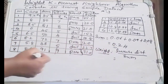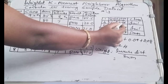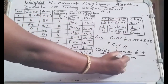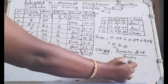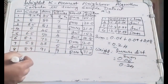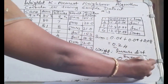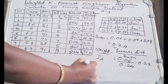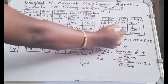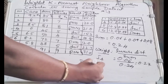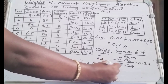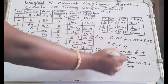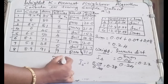To calculate the weight, divide the inverse distance of each instance by the sum. For instance 4: 0.06 / 0.24 = 0.27. For instance 5: 0.09 / 0.24 = 0.38. For instance 6: 0.08 / 0.24 = 0.34.